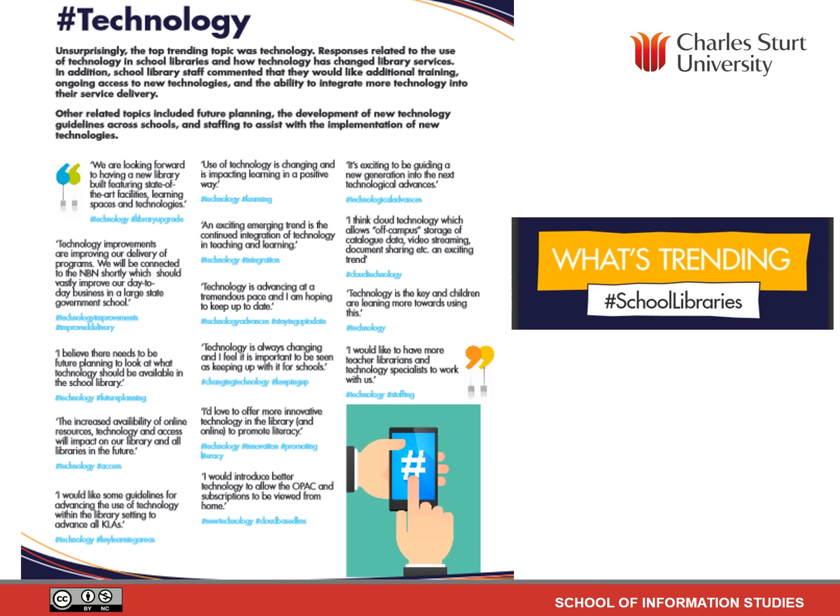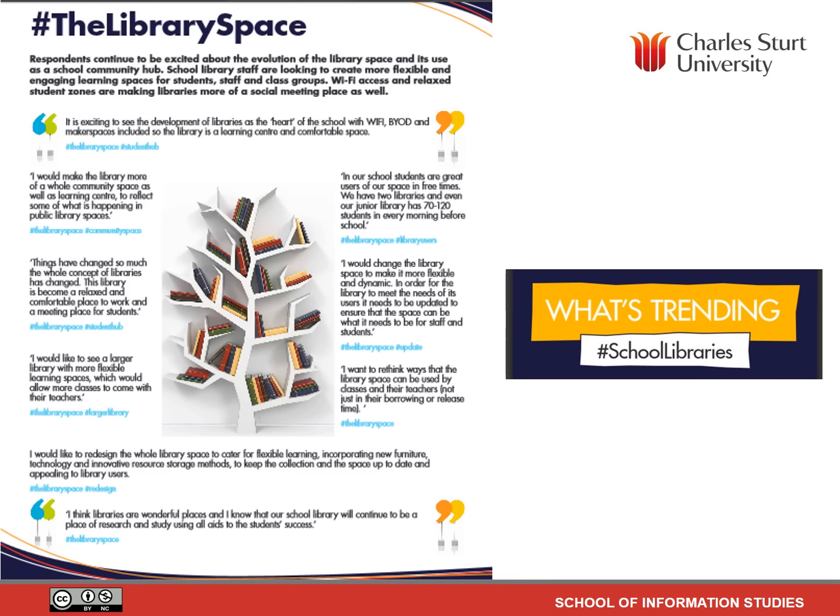So what's trending in school libraries? Number one trend is technology — unsurprising. Responses relate to the use of technology in school libraries and how technology has changed library services. School library staff commented they would like additional training, ongoing access to new technologies, and the ability to integrate more technology into their service delivery. Other related topics include future planning, the development of new technology guidelines across schools, and staffing to assist with implementation. I suggest you have a read of the comments made by various teacher-librarians there.